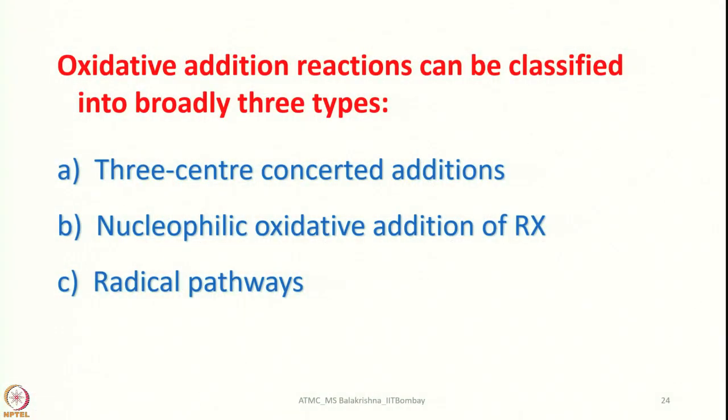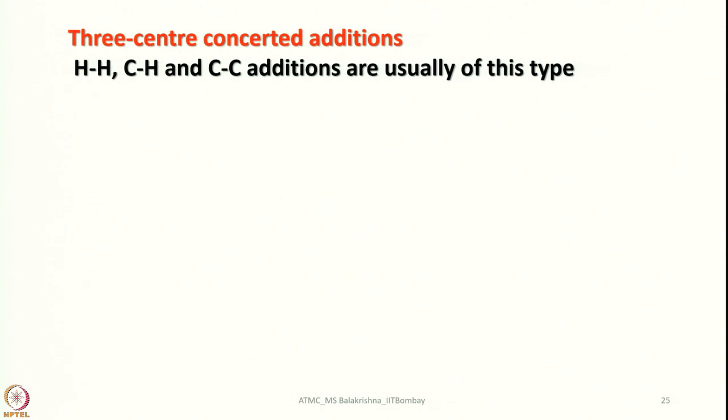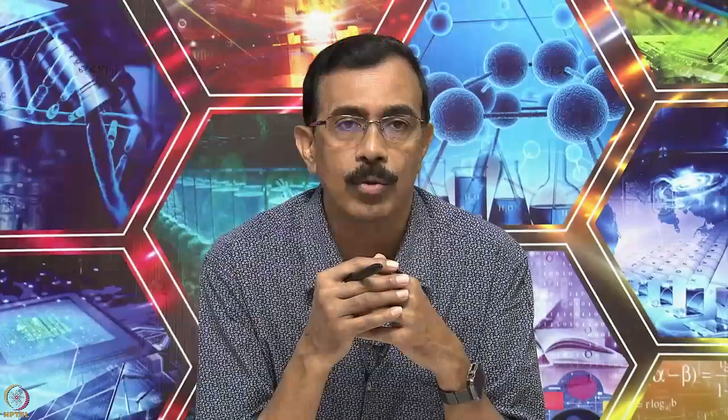Oxidative addition reactions can be classified broadly into three types: three-centred concerted addition, nucleophilic oxidative addition of RX (polar molecules), and radical pathways. For three-centred concerted addition, whether you consider H–H, C–H, C–C, B–H, Si–H bonds — all these additions take place through this type of mechanism.